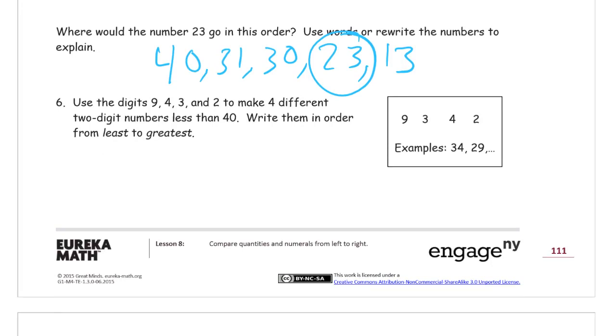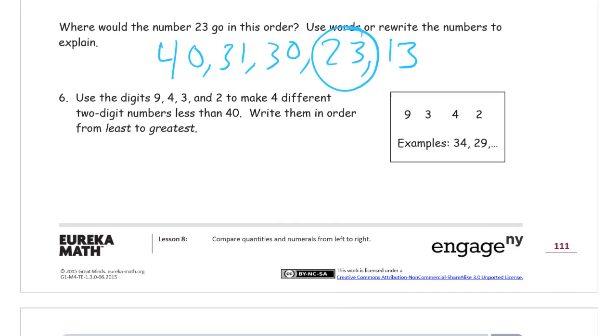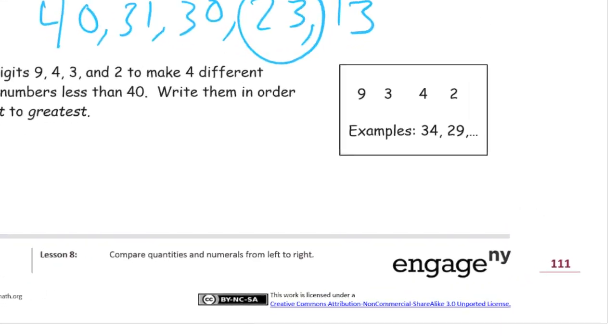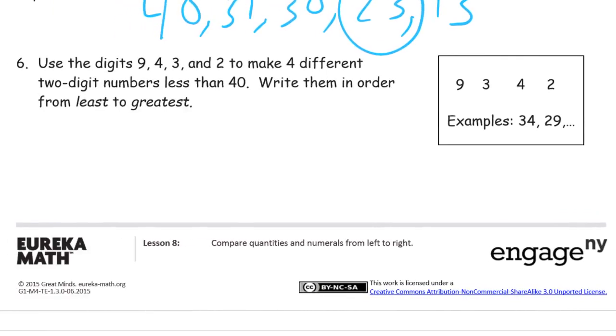Problem 6: Use the digits 9, 4, 3, and 2 to make four different two-digit numbers less than 40. Write them in order from least to greatest. So four different two-digit numbers. They already gave us two of them, but I'm going to come up with some others. So let's see.